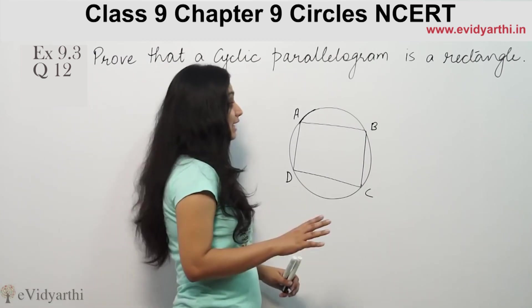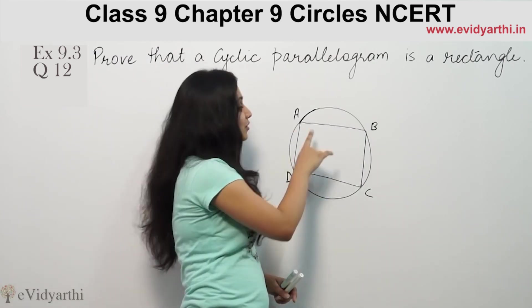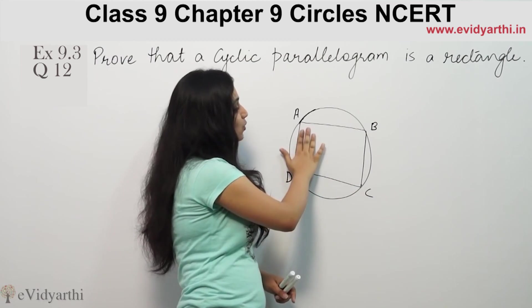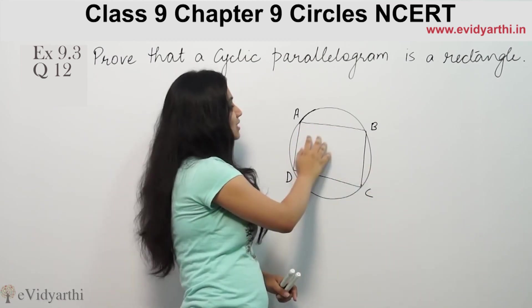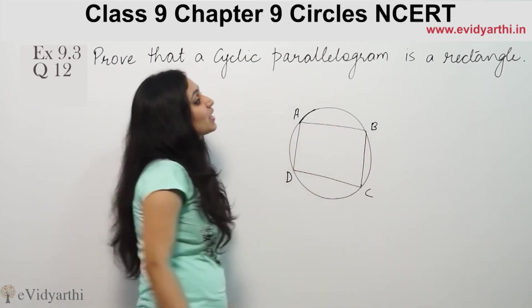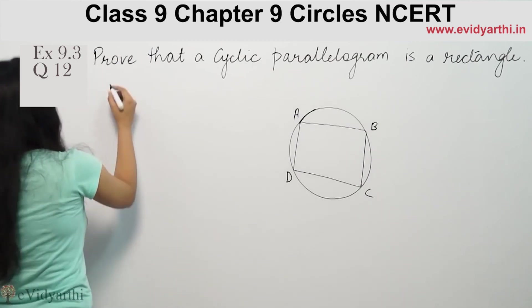So this question diagram is not given to you. You have to make a circle and then make a parallelogram. You have to label it. Suppose it is A, B, C, D. Now we have to make a parallelogram.